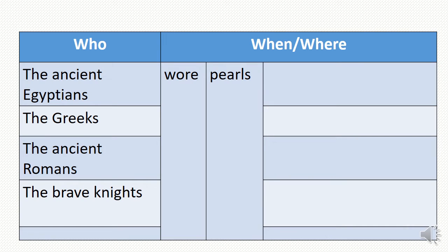Now we have a table to fill up. We have some clues about who, and we have to find out when and where the activities were done. The ancient Egyptians and pearls, the Greeks and pearls, the ancient Romans and pearls, the brave knights and pearls — you have to write when and where for each. My dear students, you have to do this activity all by yourself. So let's move to the next part of the class.